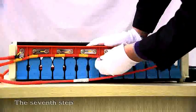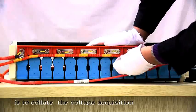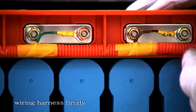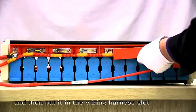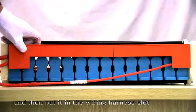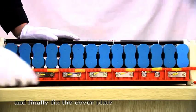The seventh step is to collect the voltage acquisition wiring harness firstly, and then put it in the wiring harness slot and finally fix the cover plate.